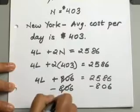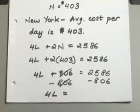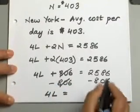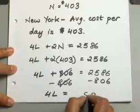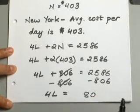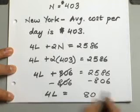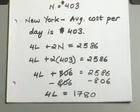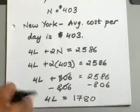You will go ahead and move your 806 over to the other side. And you should end up with 4L equals 1780.